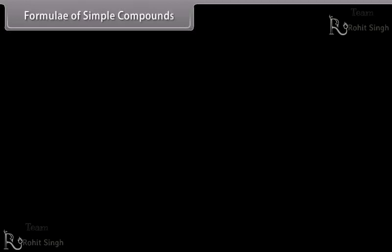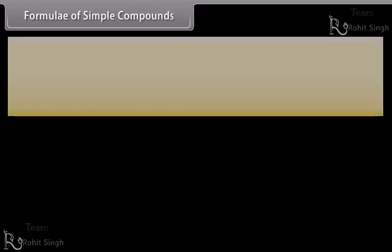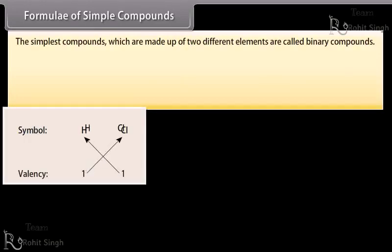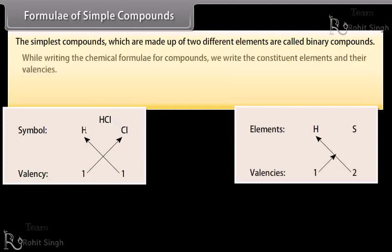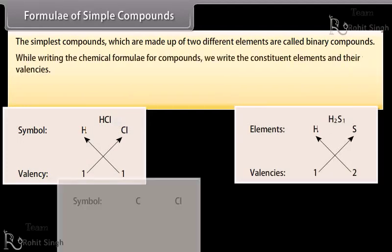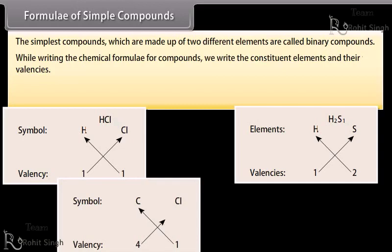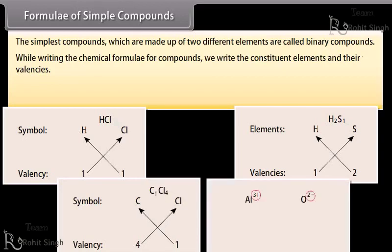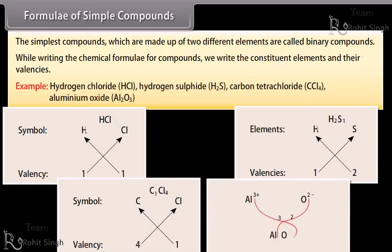The simplest compounds which are made up of two different elements are called binary compounds. While writing the chemical formula for compounds, we write the constituent elements and their valencies. For example: hydrogen chloride (HCl), hydrogen sulfide (H2S), carbon tetrachloride (CCl4), and aluminum oxide (Al2O3).